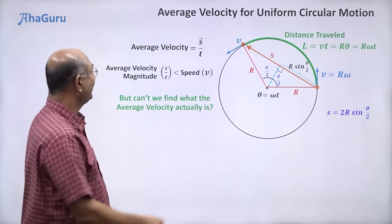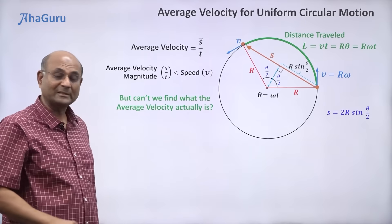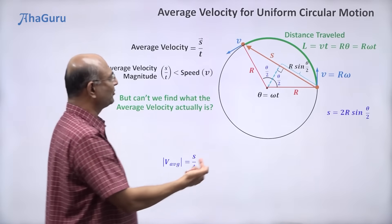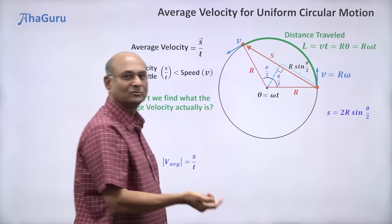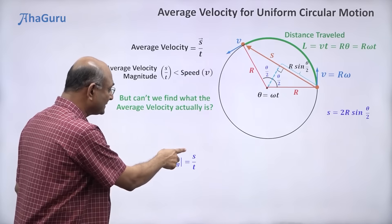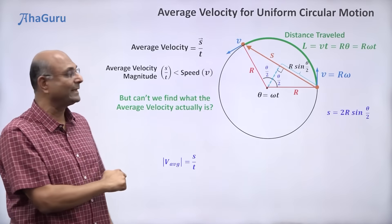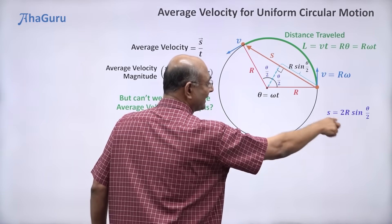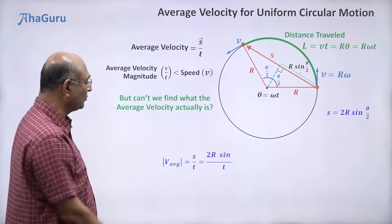From here, we can immediately figure out what is the average velocity magnitude. Direction, of course, we know it is the direction of the displacement. That we don't need to write separately. It is the displacement magnitude by time. This is the displacement magnitude, so 2r sin theta by 2 by t.